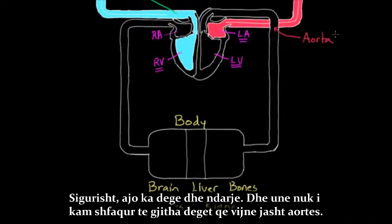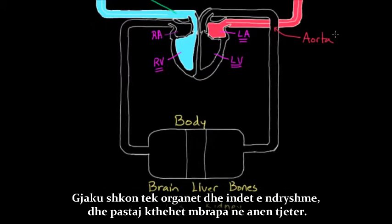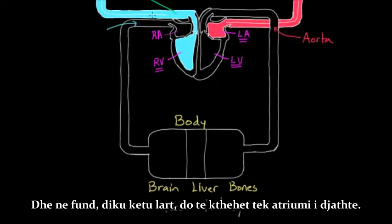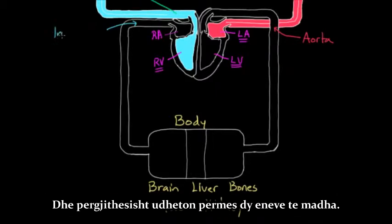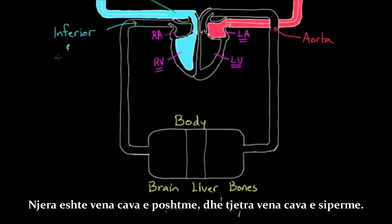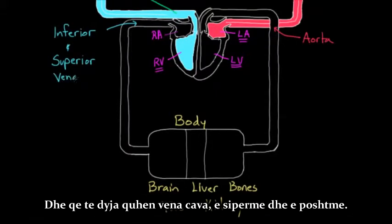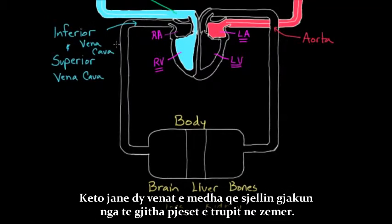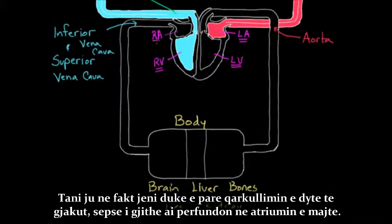This large vessel is the aorta, and of course it branches and splits — I haven't shown all the branches, but there are many. It goes to the various tissues and organs, and then comes back out the other side, going back to the right atrium. It generally travels through two major vessels: the inferior and the superior, meaning lower and upper — both called vena cava. The superior vena cava and inferior vena cava are the two major veins bringing back blood from all different parts of the body. The second circulation ends at the right atrium.